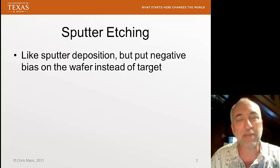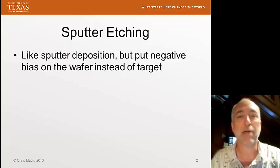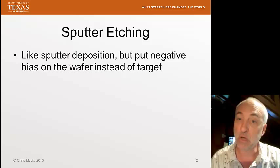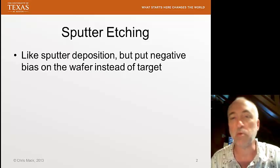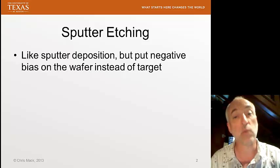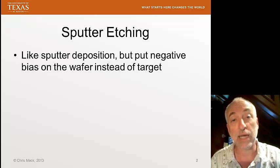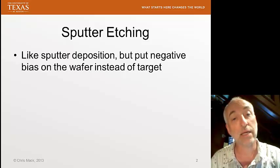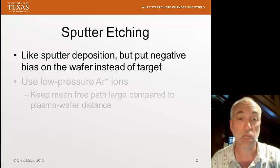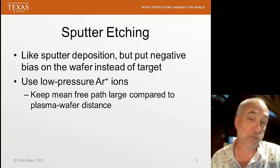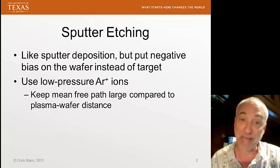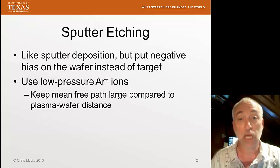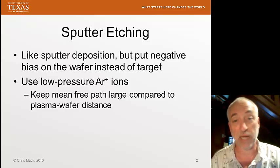A sputter etch system is very much like a sputter deposition system, except we put the wafer where the target would otherwise be. We put the negative bias on the wafer so that our argon ions are accelerated to the wafer, and we sputter etch the wafer instead of the target. We use a low-pressure argon, create a plasma of argon ions, and put the negative bias on the wafer.